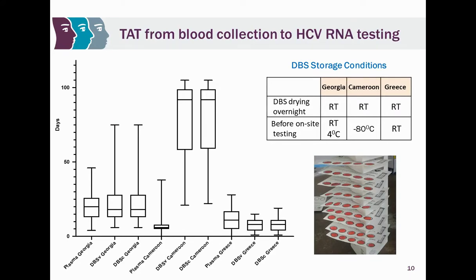This slide shows the turnaround time from blood collection to RNA testing. The box plot shows median time in days on the y-axis, with different sample types on the x-axis: plasma, DBS capillary, and DBS venous blood. In Greece and Georgia, testing occurred very quickly — a median of about 10 days — while in Cameroon there were some delays and the turnaround time was extended. Because of the extended timeline in some sites, we had to resort to cold chain storage to prevent RNA degradation.